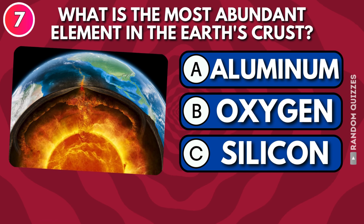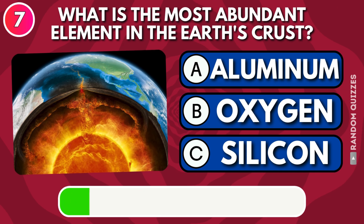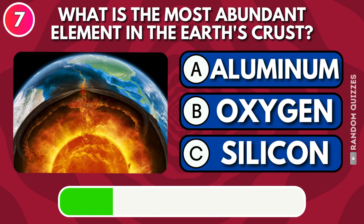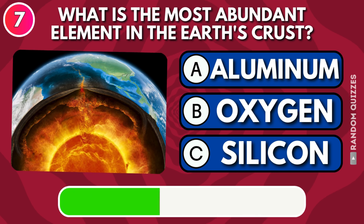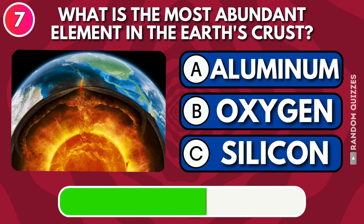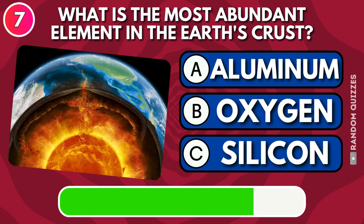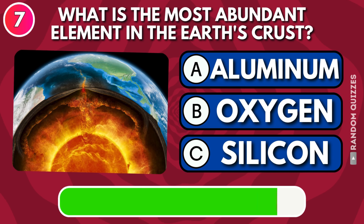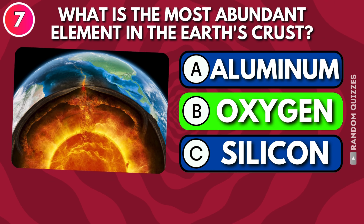What is the most abundant element in the Earth's crust: aluminum, oxygen, or silicon? Answer: Oxygen.